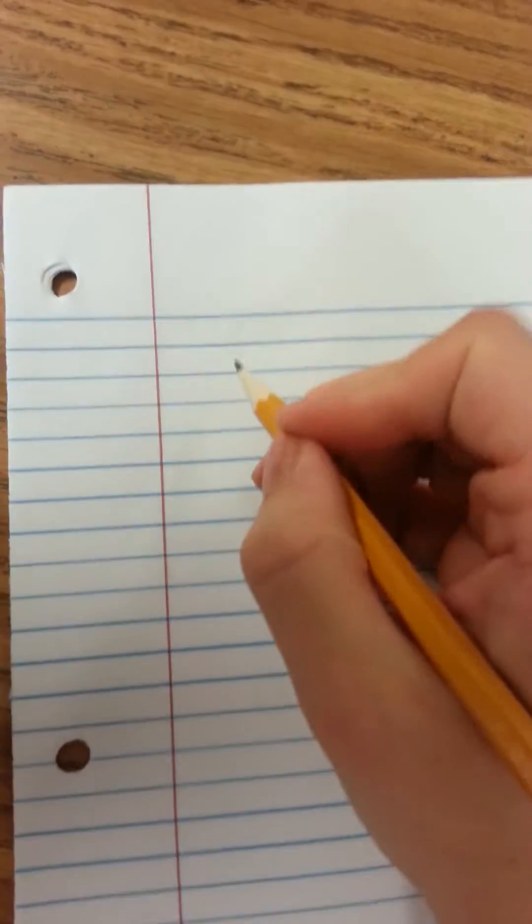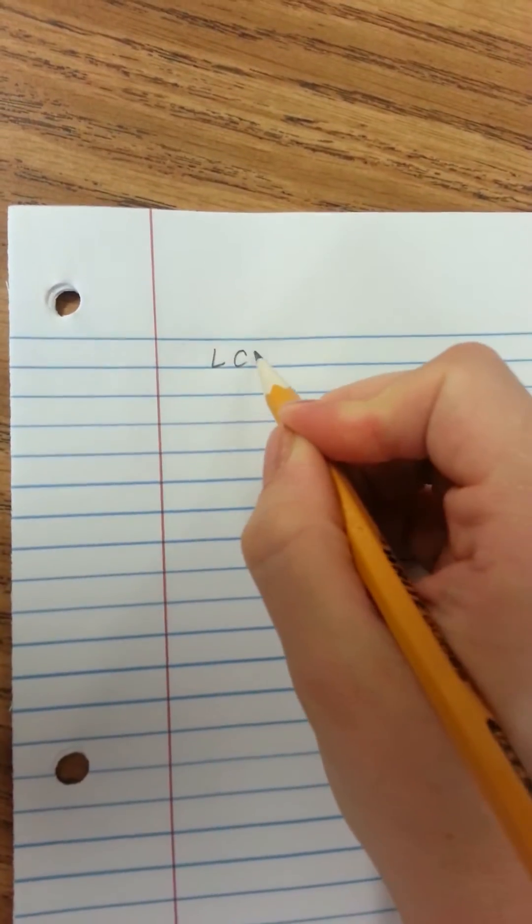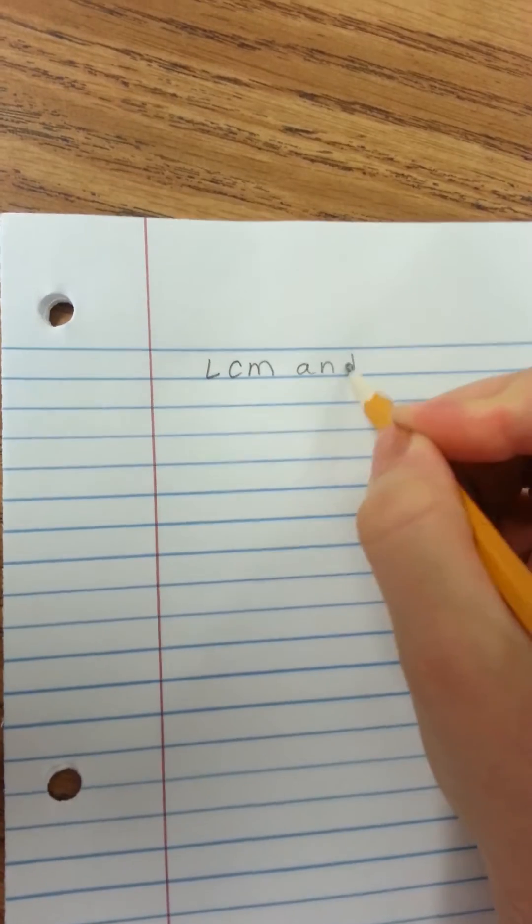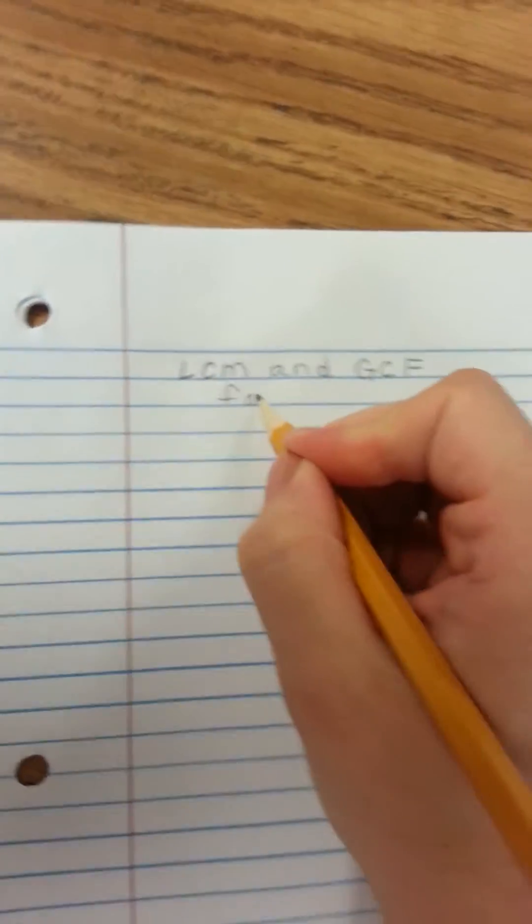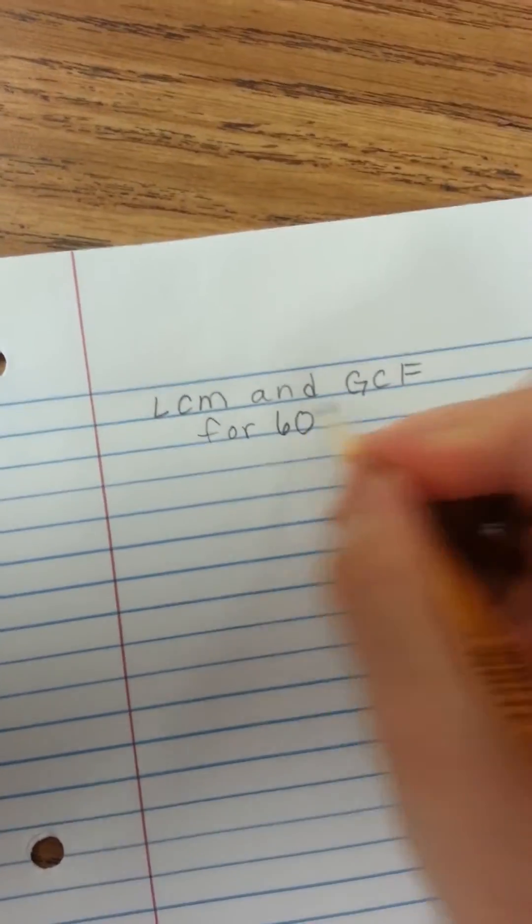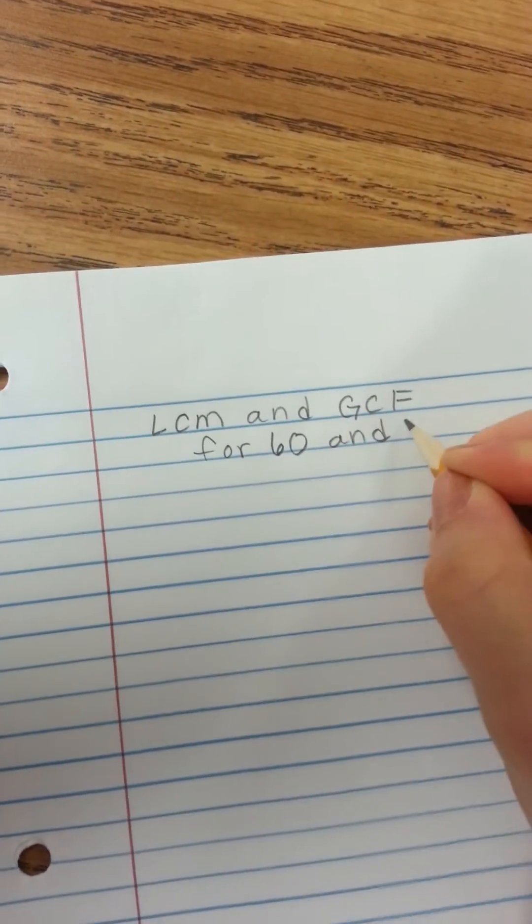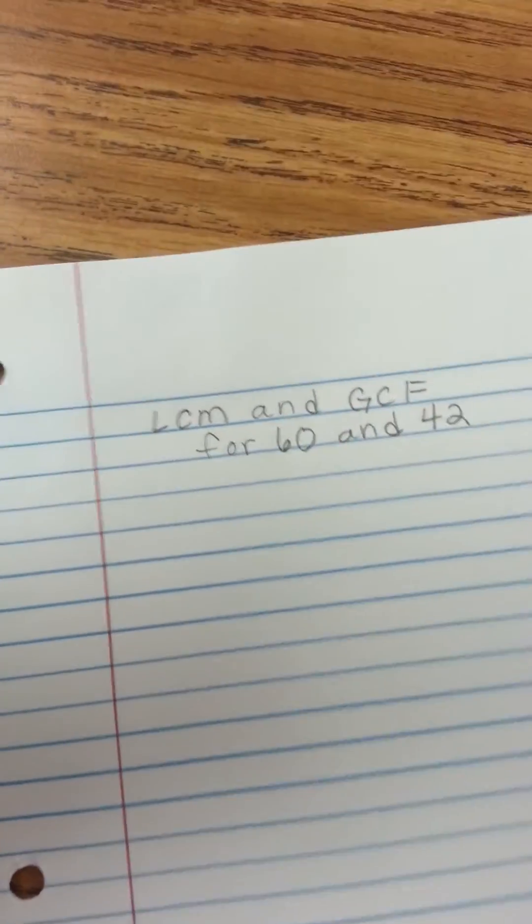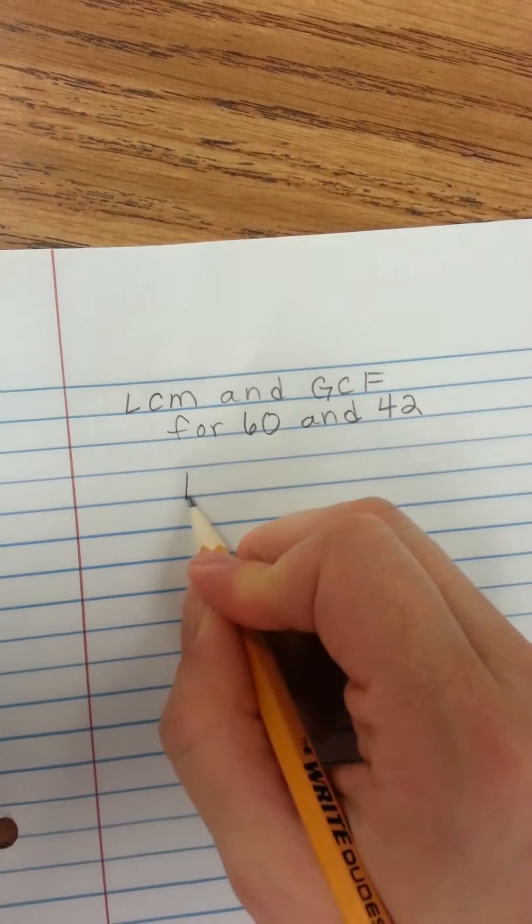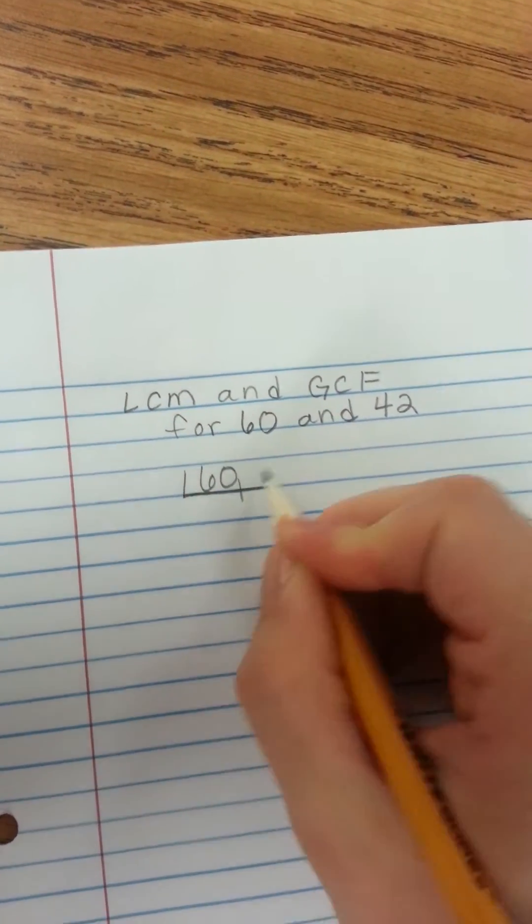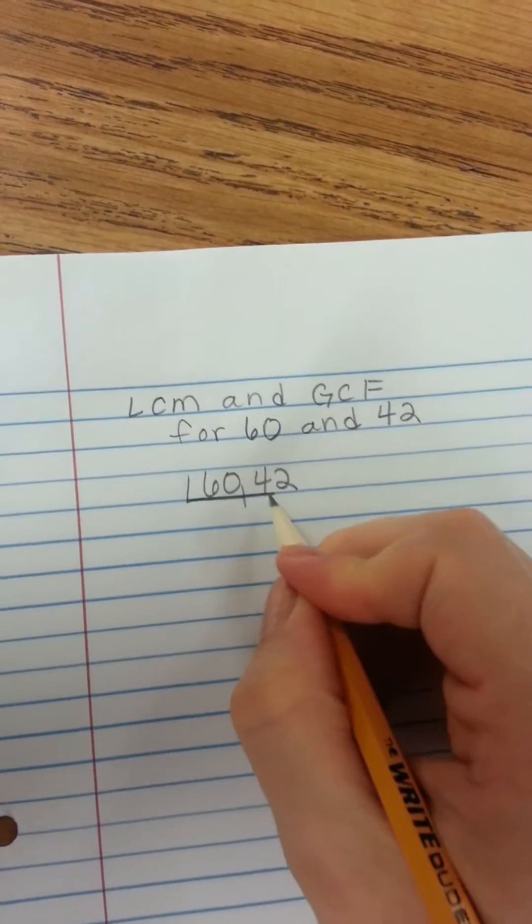Okay, let's say your teacher said to find the least common multiple and the greatest common factor for 60 and 42. Okay, so we're going to start out by sticking 60 and 42 in the bobsled.